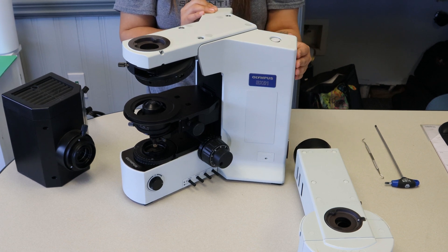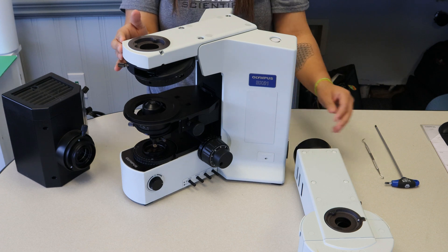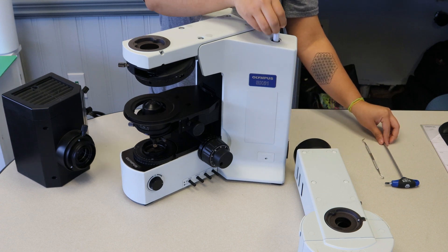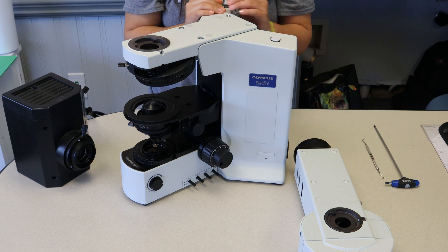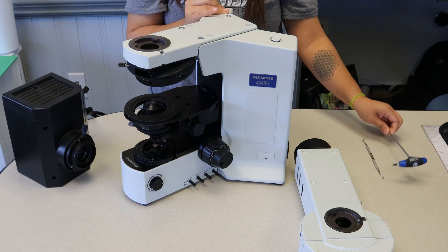So items you'll need are, of course, your BX-series microscope. Today we're using the BX-51. The 3mm Allen wrench included in the upper right-hand corner of the stand. A 4mm T-handled Allen wrench. It doesn't have to be T-handled, but we find that helps give you a little extra leverage.